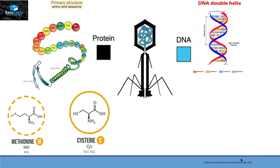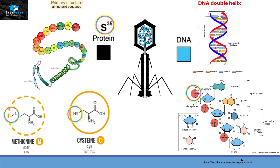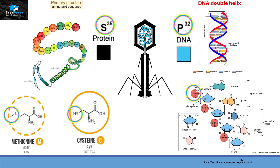Proteins and DNA are polymers. Protein is made up of tiny units called amino acids, and DNA is made up of tiny units called nucleotides. Hershey and Chase used the isotopic form of two elements: phosphorus present in DNA, and sulfur present in the amino acids cysteine and methionine. They took sulfur-35 to represent proteins and phosphorus-32 to represent DNA.